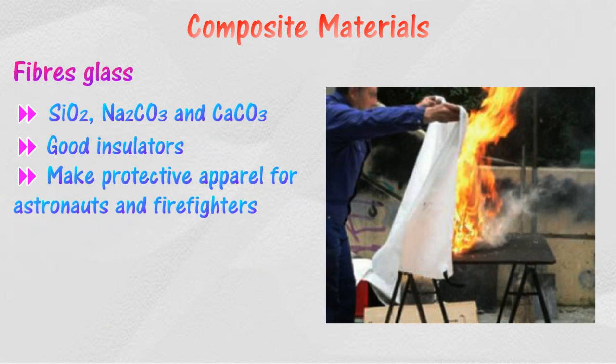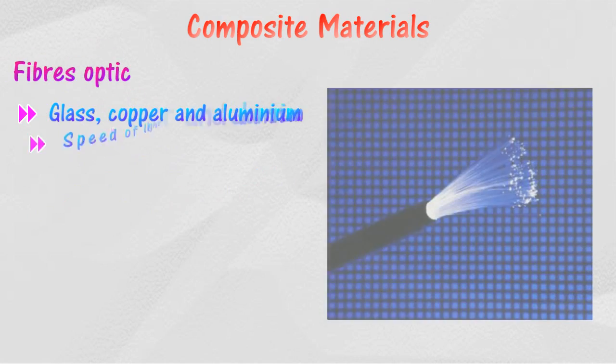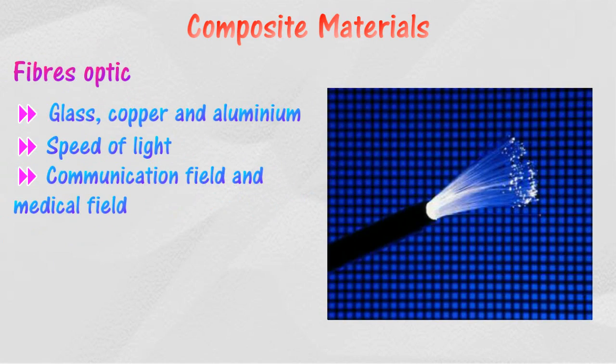Fiberglass is made from silica, sodium carbonate, and calcium carbonate. It is a good insulator of heat and electricity and is used to make protective apparel for astronauts and firefighters.